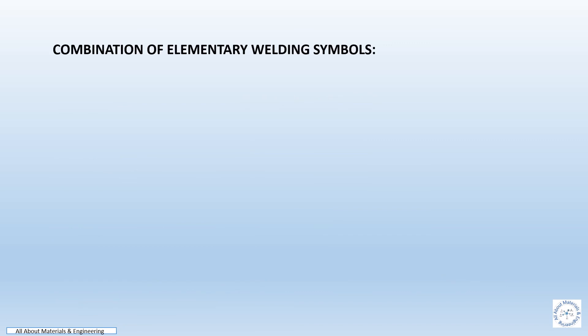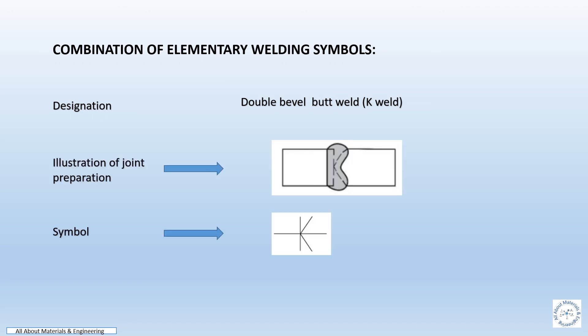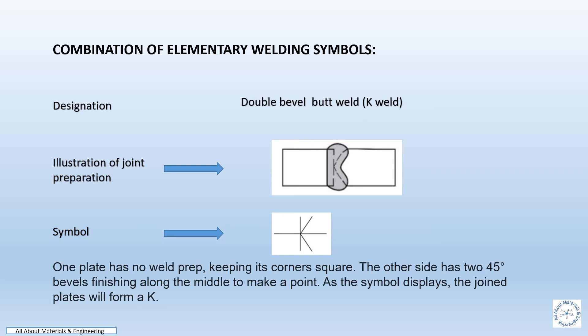Combination of elementary welding symbols for double bevel butt weld, or K weld. The sketch shows the joint illustration for preparation and the symbol to be represented in the drawing. One plate has a weld preparation keeping its corners square, while the other side has two 45 degree bevels finishing along the middle to make a point. As the symbol displays, the joint plates will form a K.